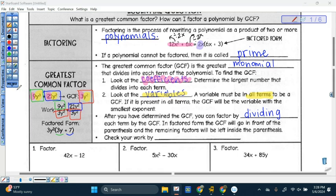And in this factored form, what we do is we take the GCF and it goes out in front of the parentheses. Got that 3y squared. And then the remaining factors go inside the parentheses.